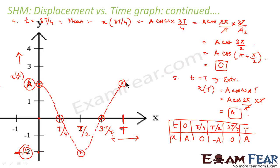This curve keeps repeating because we calculated the values for one cycle — from t = 0 to t = T. After T, the same motion keeps repeating, so this curve will also keep repeating. We say that the displacement versus time curve for simple harmonic motion is a sinusoidal curve — a sine or cosine curve — which varies periodically with time.